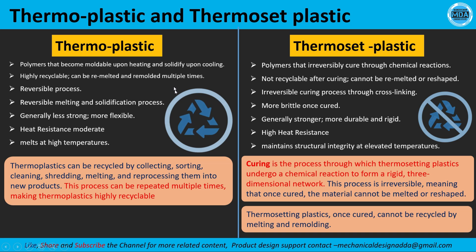After use, thermoplastic products can be melted and shaped again to create new products. In thermosetting plastics, however, once the plastic gets its shape, we cannot use it again. Thermosetting plastics undergo an irreversible chemical reaction that forms a rigid three-dimensional network.